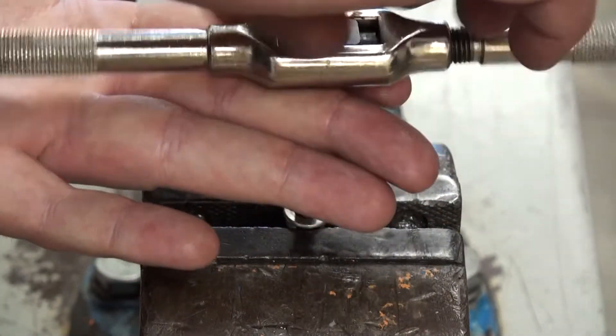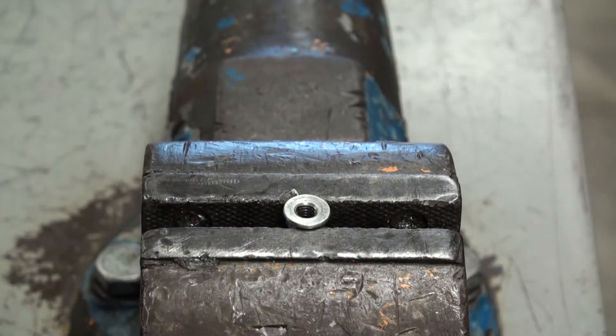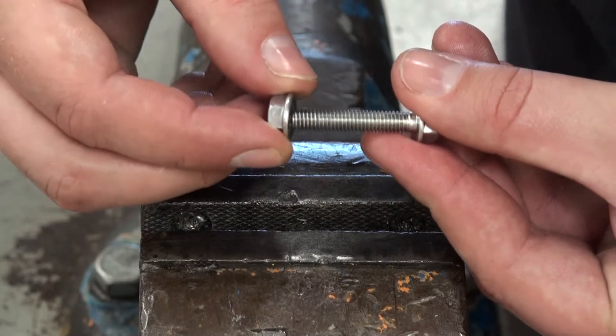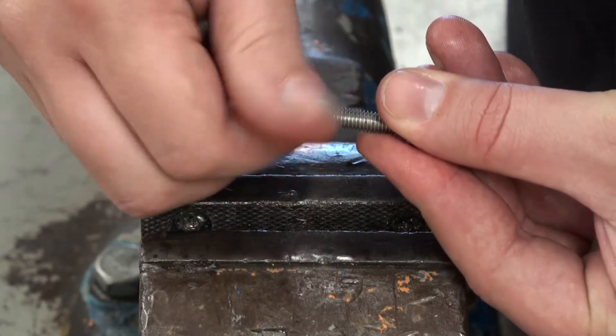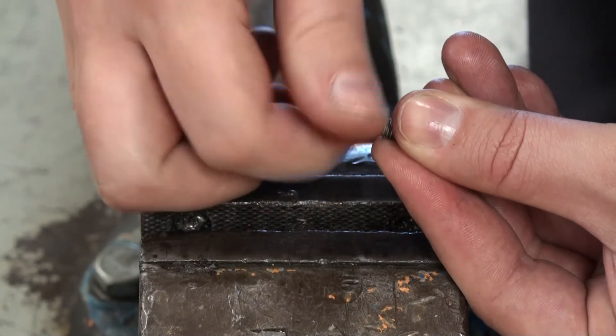And like before, I want to make sure that I'm using upward pressure when I take this out to prevent cross threading. As you can see here, we have nice clean threads now and these two fit together perfectly. Thank you for watching.